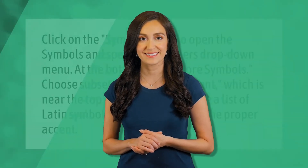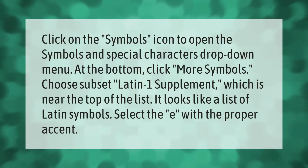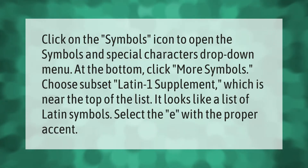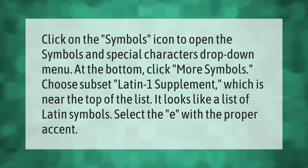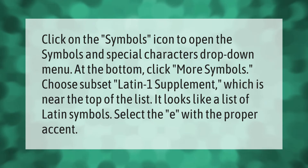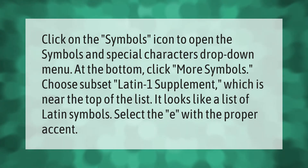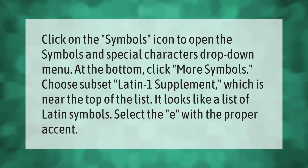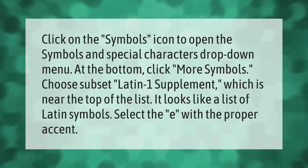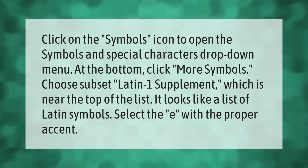Click on the Symbols icon to open the Symbols and Special Characters drop-down menu. At the bottom, click More Symbols and choose the subset Latin-1 Supplement, which is near the top of the list. It looks like a list of Latin symbols — select the E with the proper accent.